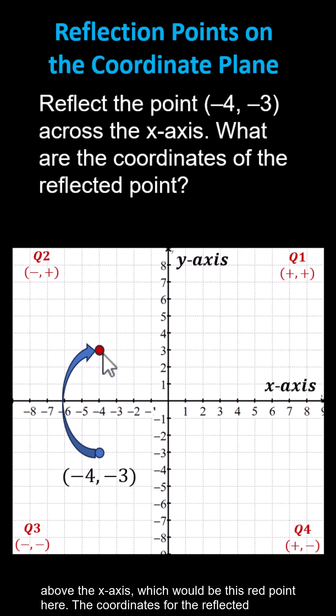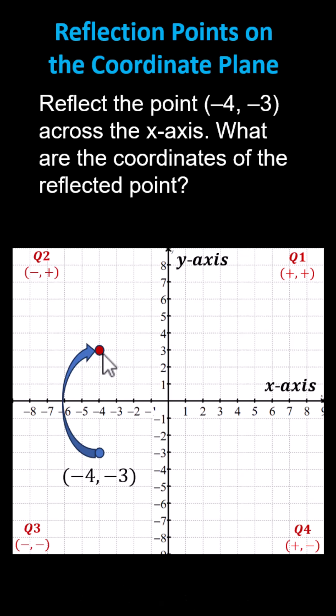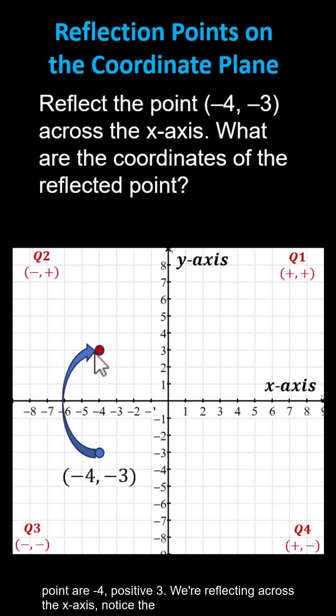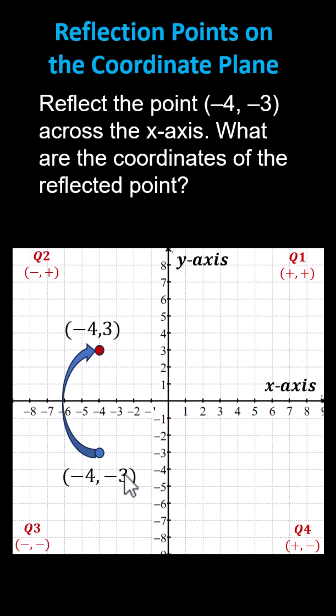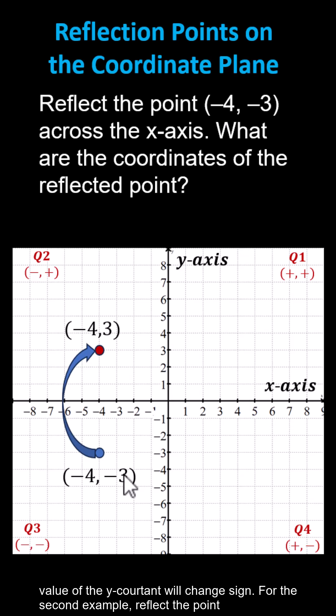The coordinates for the reflected point are negative 4 comma positive 3. When reflecting across the x-axis, notice the value of the y-coordinate will change sign.